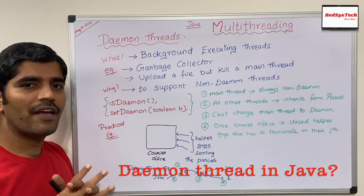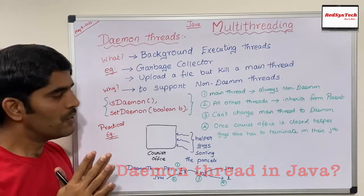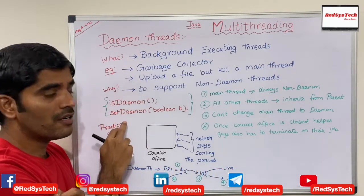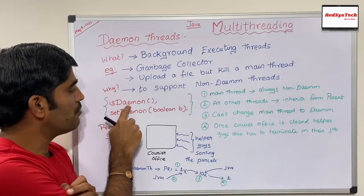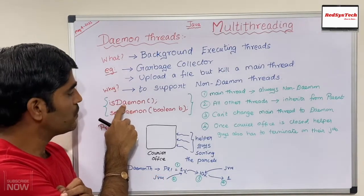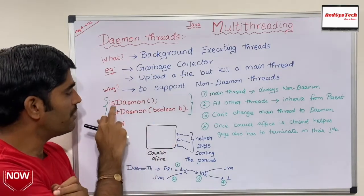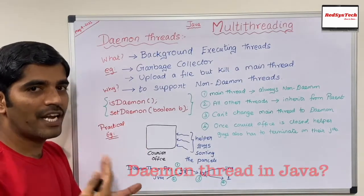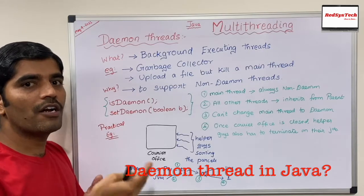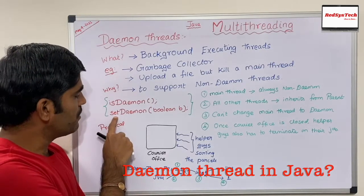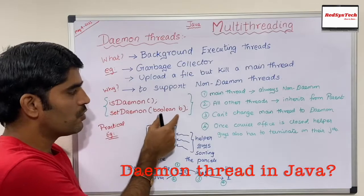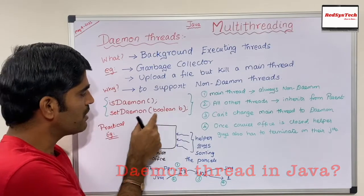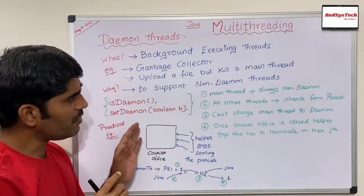Now let's see how we can check whether a given thread is a daemon or not. The Oracle team provides a couple of methods. One is `isDaemon()` — it returns a boolean value. If it returns true, that thread is a daemon thread; if it returns false, it is a non-daemon thread. If you want to change a thread from daemon to non-daemon or vice versa, there is the `setDaemon(boolean)` method. Passing true makes that thread a daemon; passing false makes it a non-daemon thread.